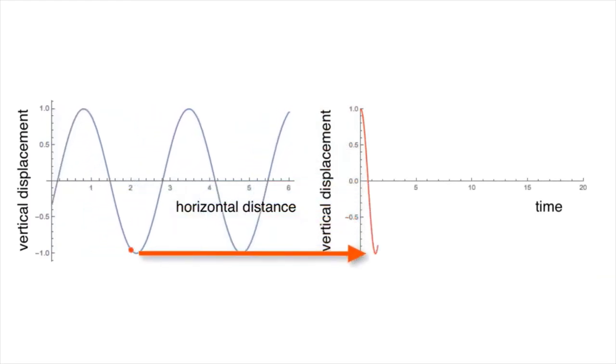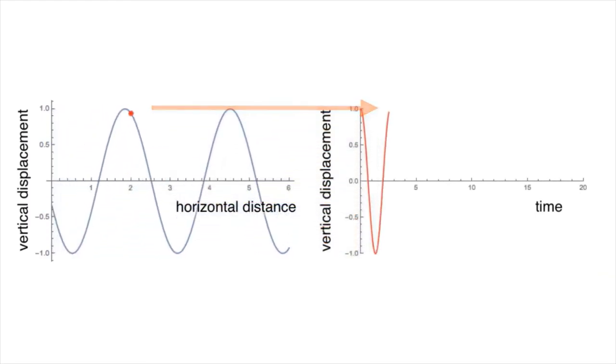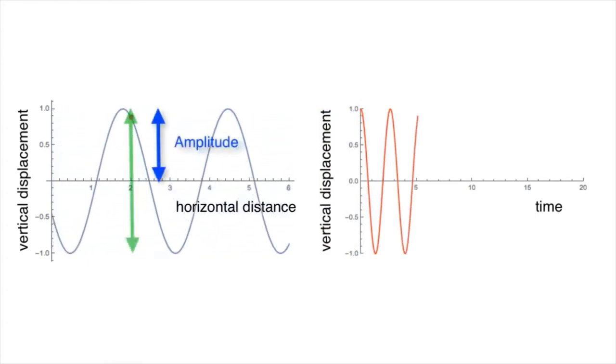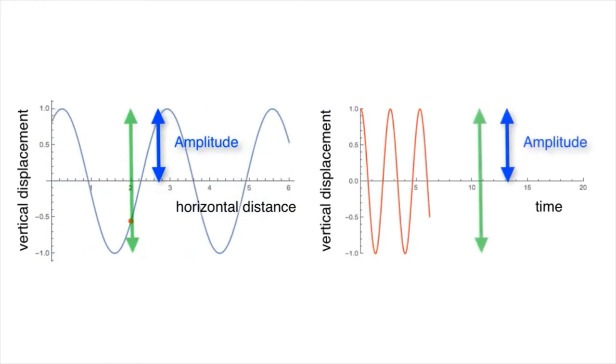This looks a lot like the curve in a displacement versus distance plot. We can still identify the amplitude. It is half the total up and down displacement that the particle or molecule undergoes.